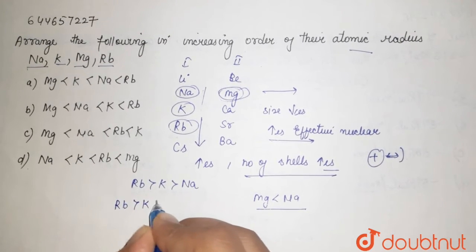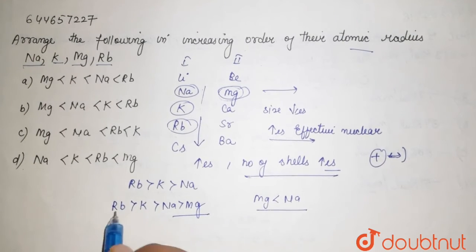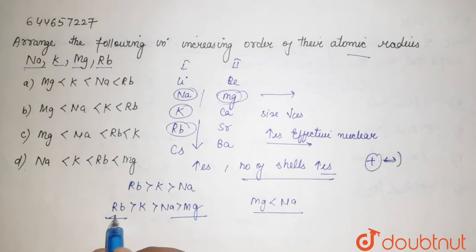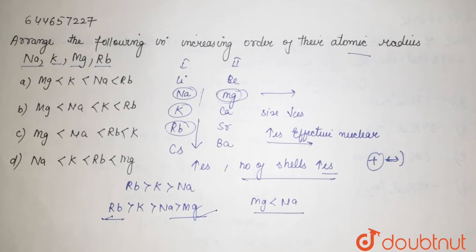...the greatest size, then your potassium, then your sodium, and then your magnesium. Magnesium has the smallest size and rubidium has the greatest size because down the group your size increases, and along the period your size decreases because of your effective nuclear charge.